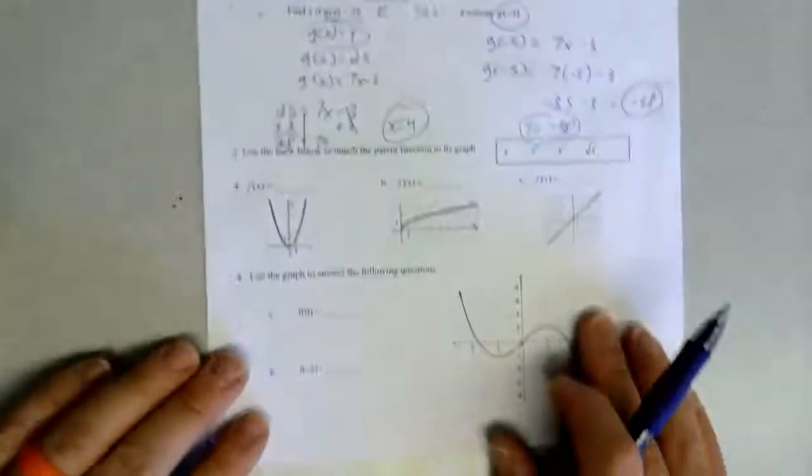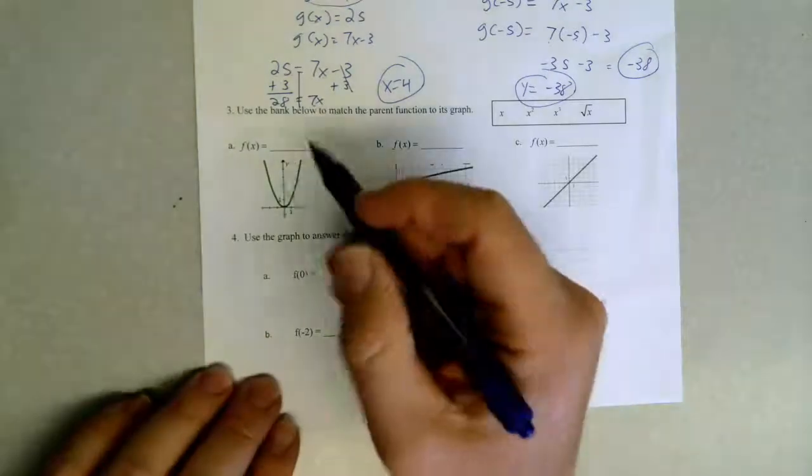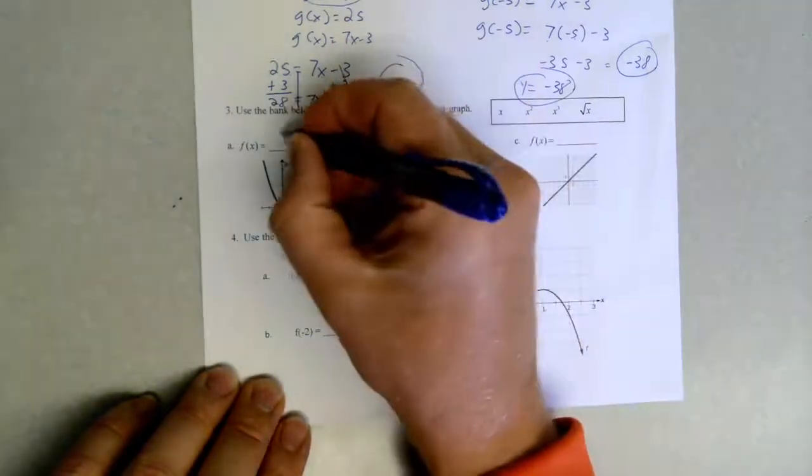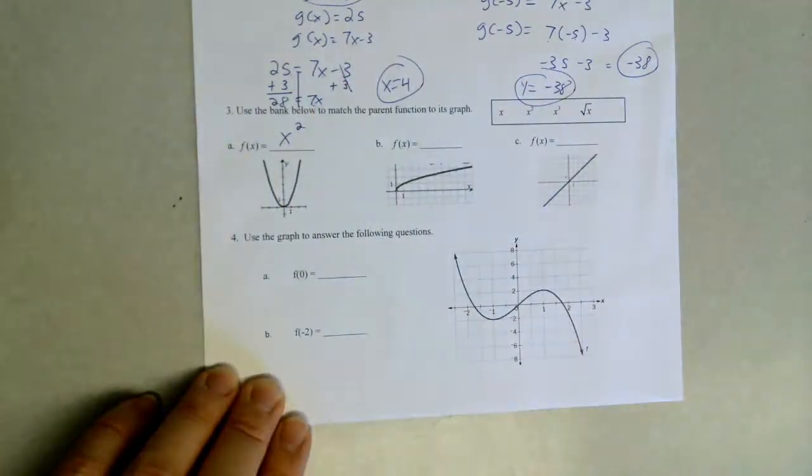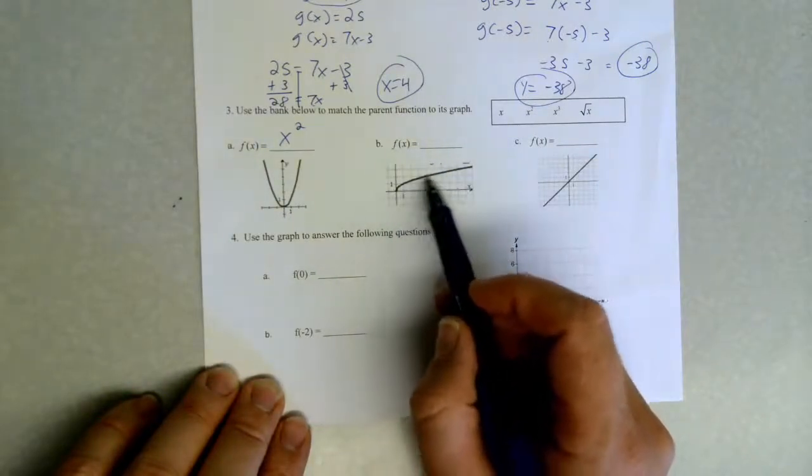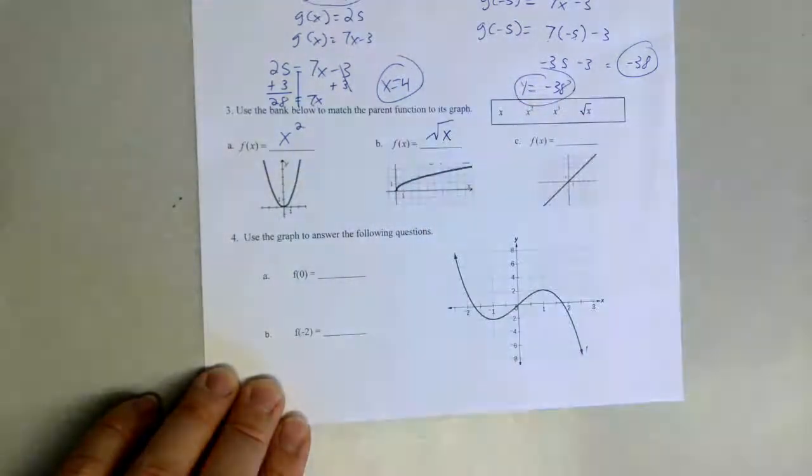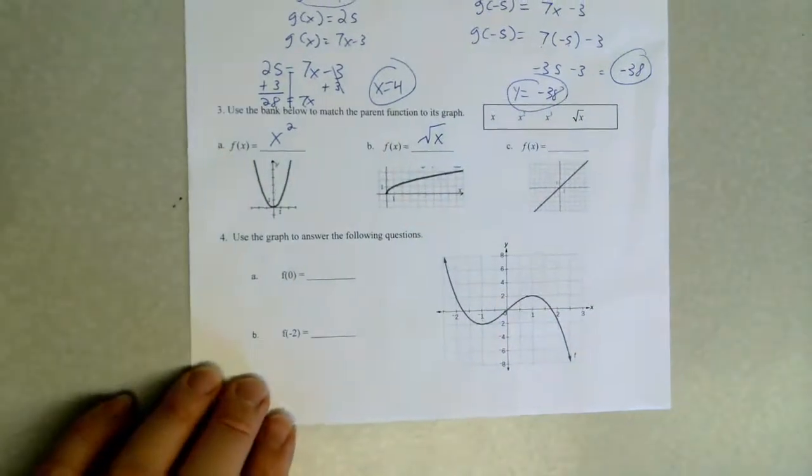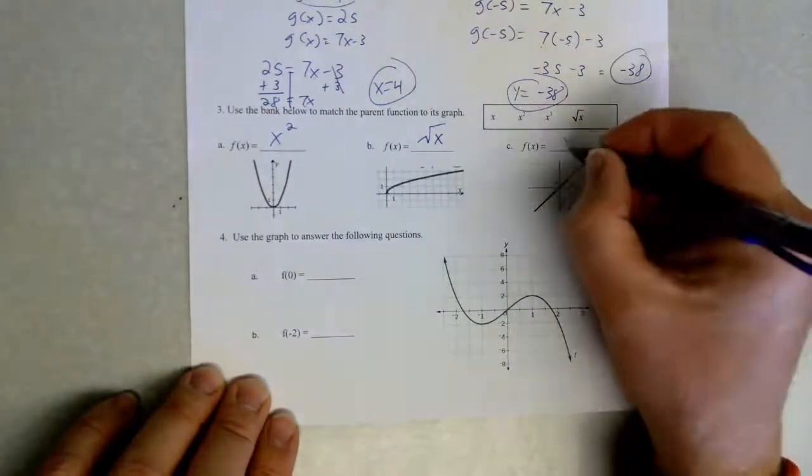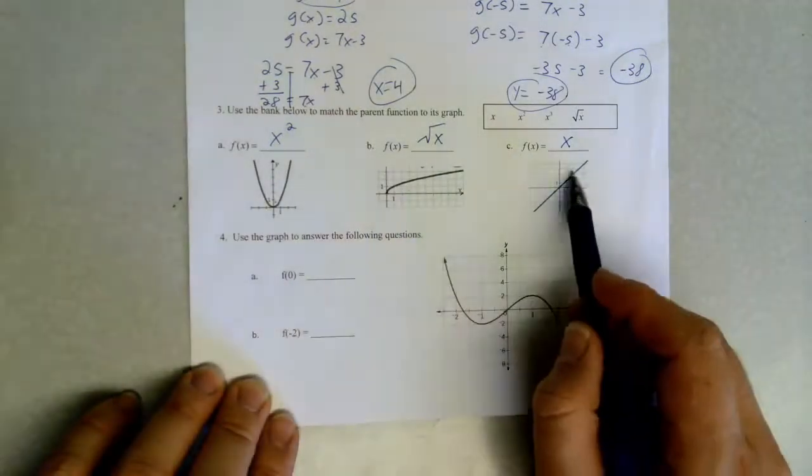All right, almost done. Here we're just matching the parent graphs. Whenever we have an upwards parabola that touches the origin, that is our x² graph. Whenever we have this weird looking shape, almost like half of a parabola but it starts at the origin, that is our square root of x function. Whenever we have a linear function that goes through the origin with increasing slope of one, that is just our linear x.